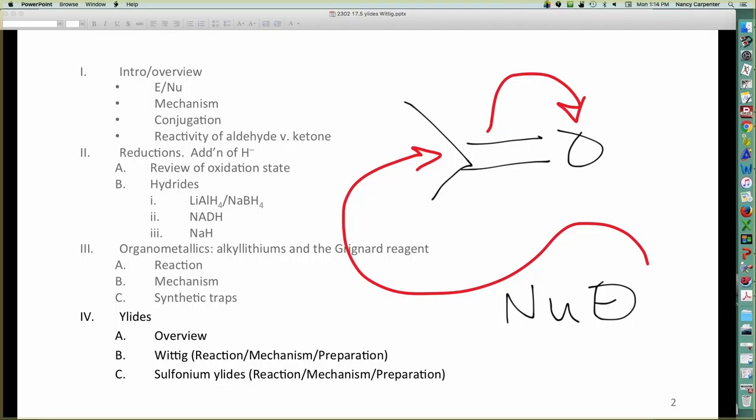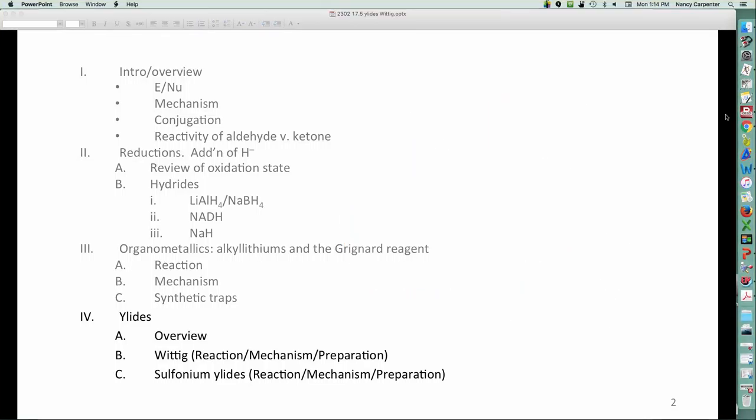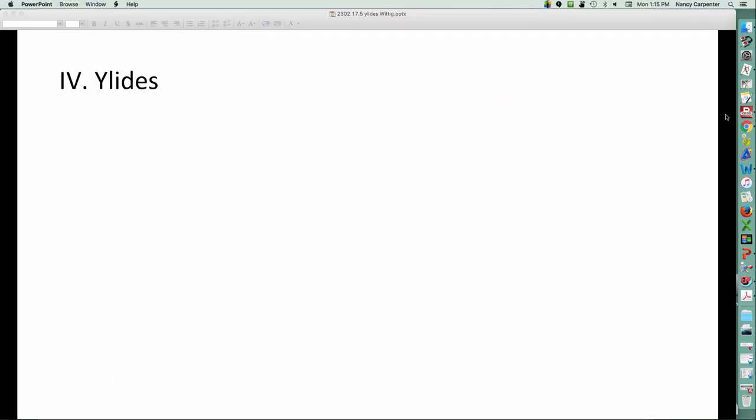Ylides are also carbon nucleophiles that are anionic. They are kind of odd, and you'll understand why as we go through this mini lecture. So the reason they're ylides, or the definition of an ylide, is a carbon with a negative charge on it by virtue of the fact that it is attached to another atom right next door that has a positive charge on it. That's an ylide.